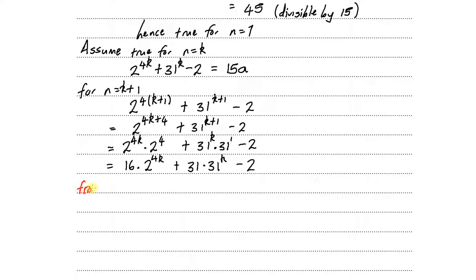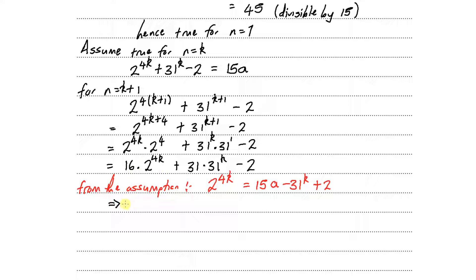From the assumption, we make 2 to the power of 4k the subject, giving us 2 to the power of 4k equals 15a minus 31 to the power of k plus 2. Substituting this into our expression, we replace 2 to the power of 4k with (15a minus 31 to the k plus 2), giving us 16(15a minus 31 to the k plus 2) plus 31 times 31 to the power of k minus 2.